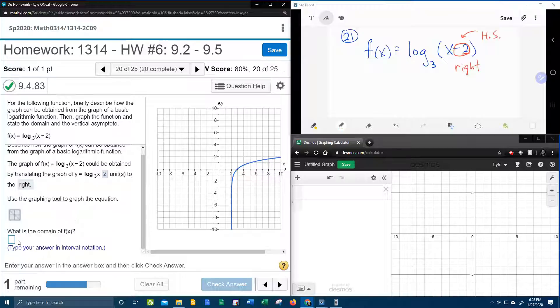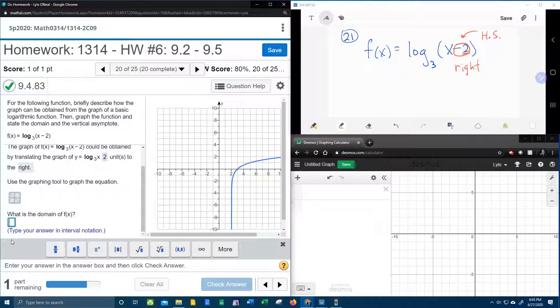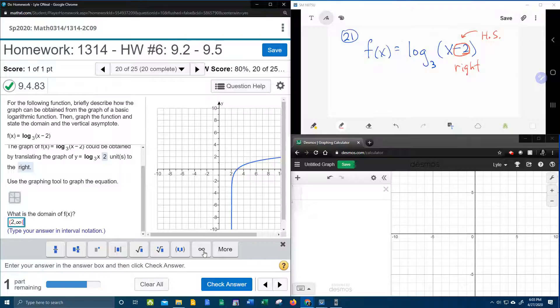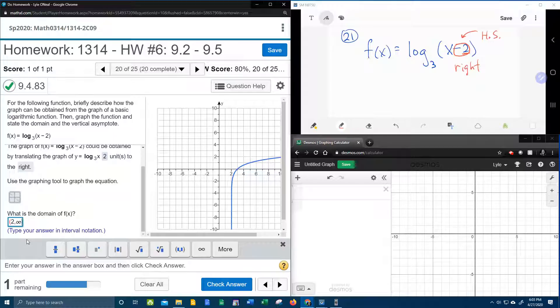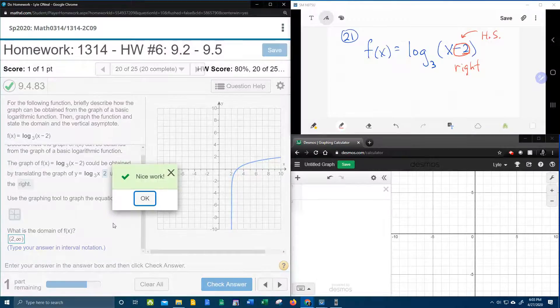They also want the domain. So if you look at this graph, can you see that the graph starts existing at 2, and will exist forever to the right? So we can see that it's going to start at 2, but actually this is going to be an asymptote, so 2 is not included, and so we're going to use a parenthesis instead of a bracket. Everything from 2 to infinity.